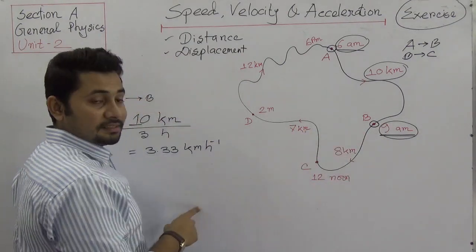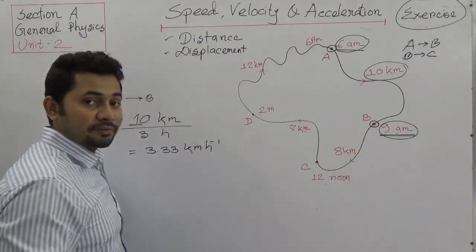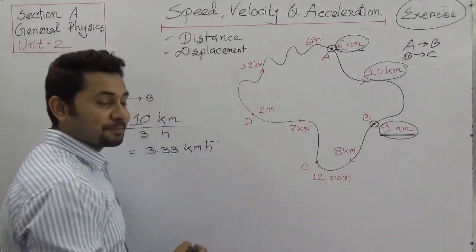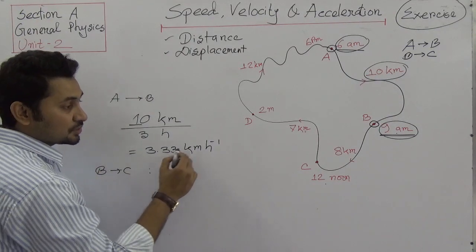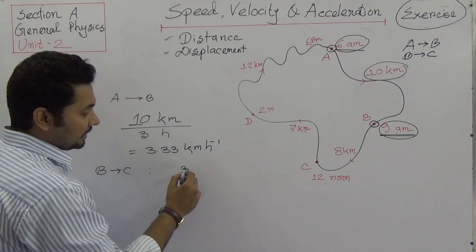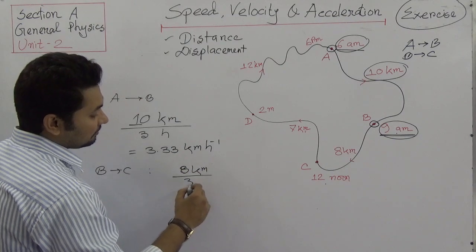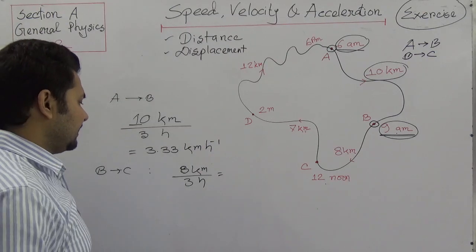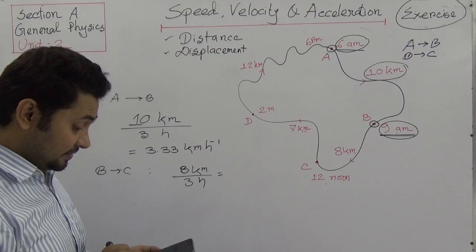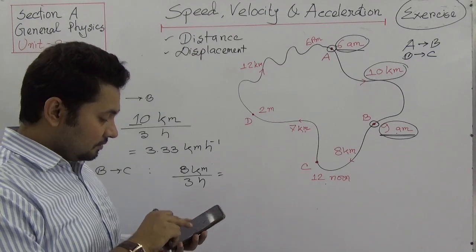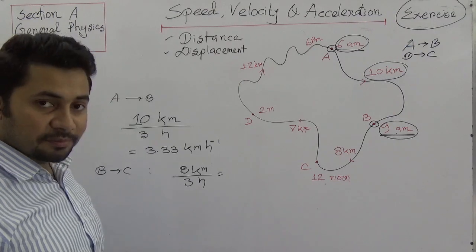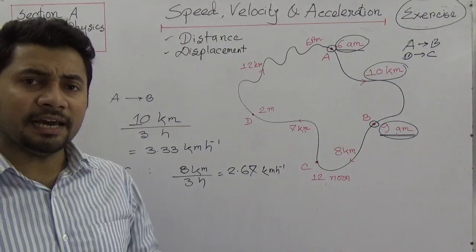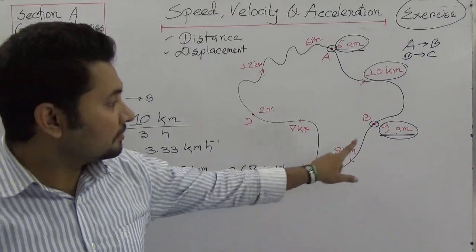Now from B to C: this segment goes from 9 a.m. to 12 noon, which is again 3 hours. In this 3 hours, the cyclist travelled 8 km. So from B to C, the distance is 8 km in 3 hours, giving an average speed of 8 ÷ 3 = 2.67 km per hour. So 2.67 km per hour is the average speed of the cyclist from B to C.